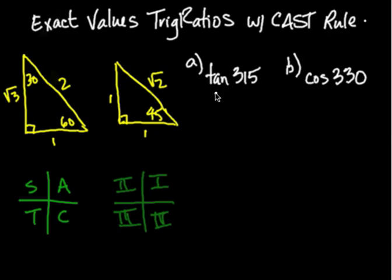The first thing to do is look at your question and find the related angle in quadrant 1. So 315 degrees I know is going to lie somewhere here in quadrant 4. I need to know the related angle in quadrant 1, and that is 45 degrees.